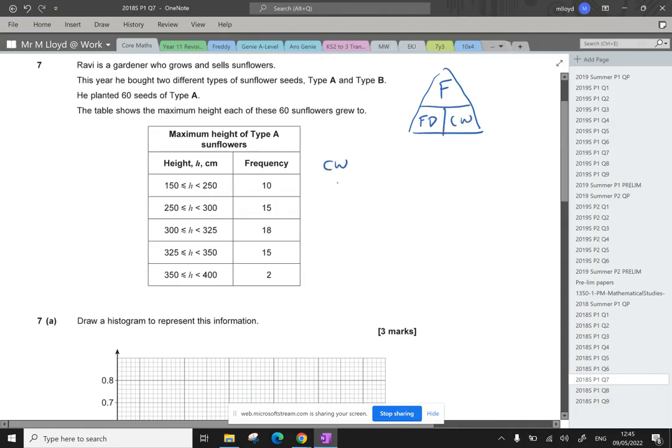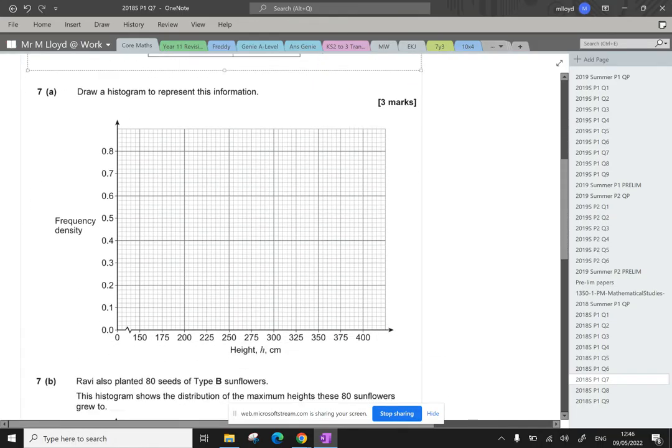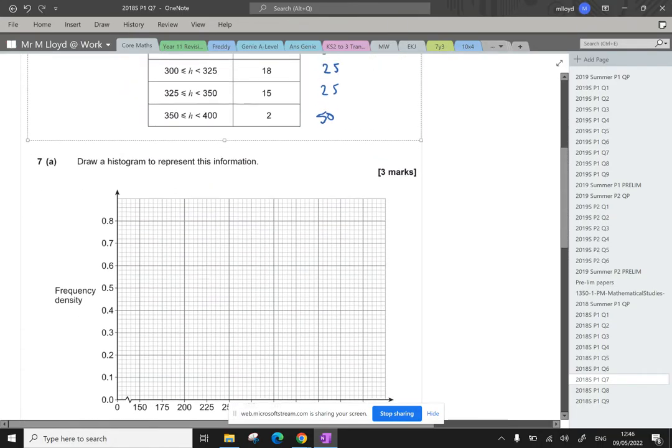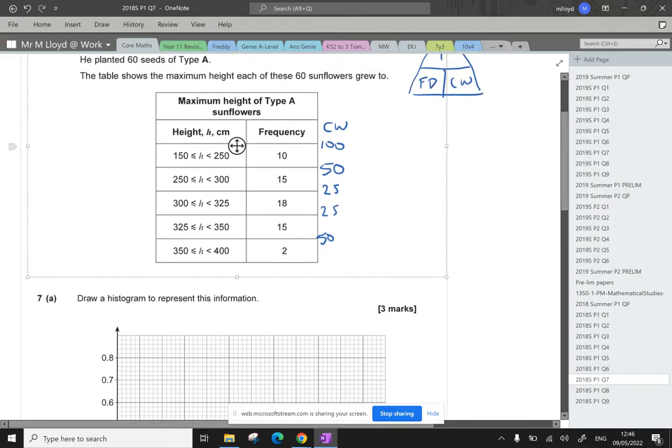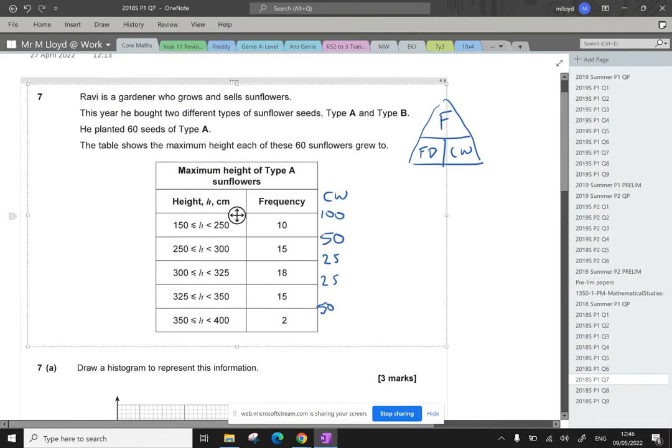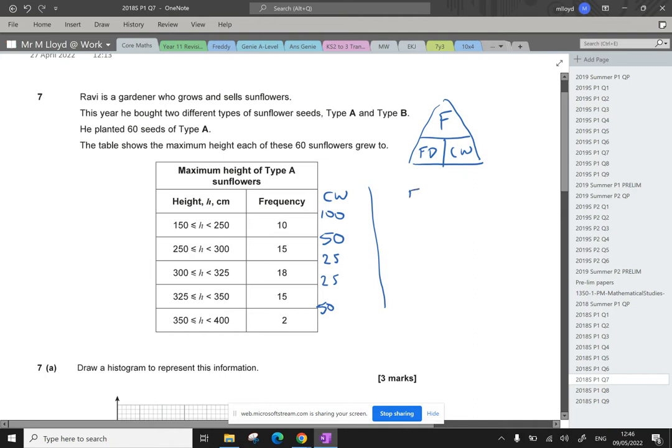So our class width for these, we've got 100, we've got 50, 25, 25, and 50. That's all in centimeters. Okay, so frequency divided by class width gives us our frequency density.